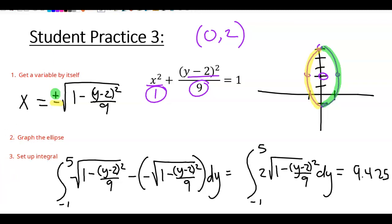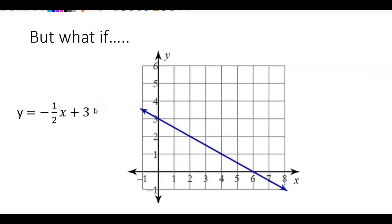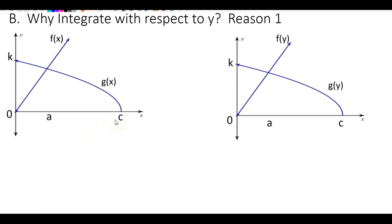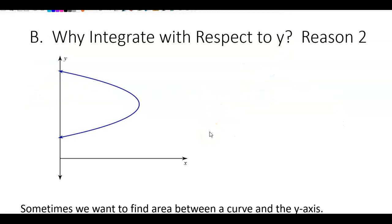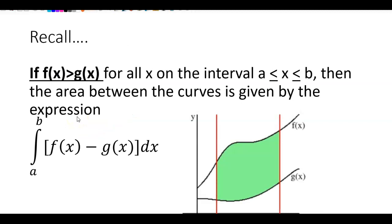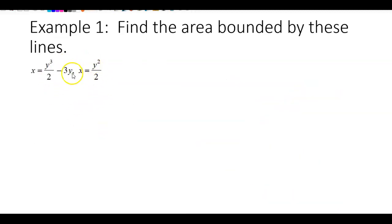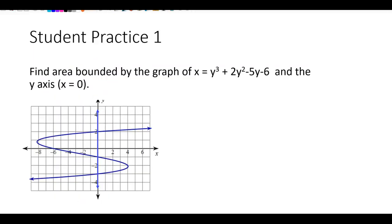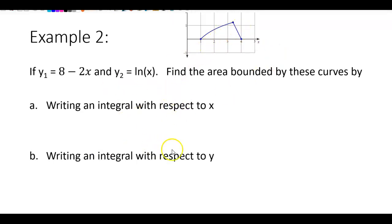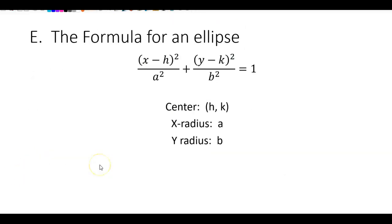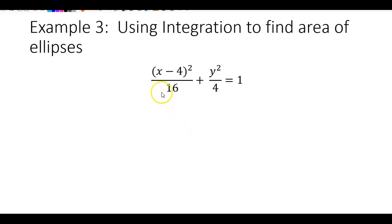That's the end of our lesson. The main objective was integration with respect to y. We do this because it sometimes makes the integral easier, sometimes we want area between the curve and the y-axis, and sometimes the equations are given in terms of y. Example 1 covered equations already in that form, Example 2 showed two methods to demonstrate one may be easier, and the third example introduced ellipses. Hopefully it was helpful — see you in class.